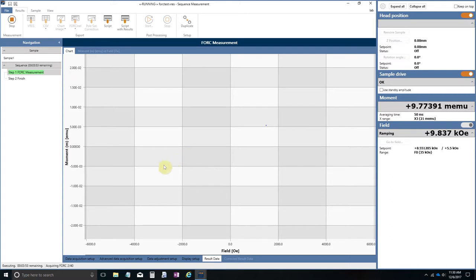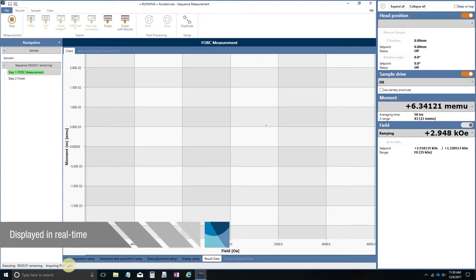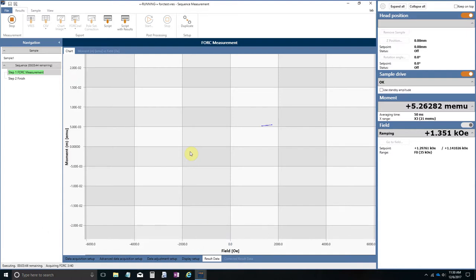And it will start to collect data. Here you can see the first point. You can see down here FORC 2 of 40. Now FORC 3 of 40. And so forth and so on.